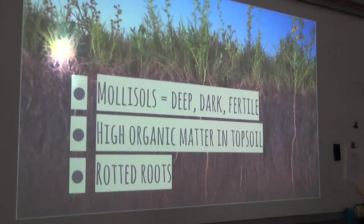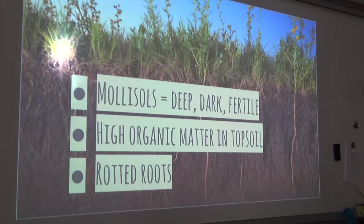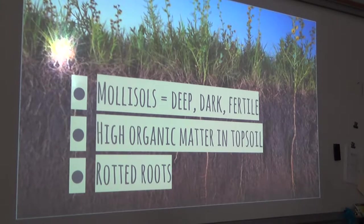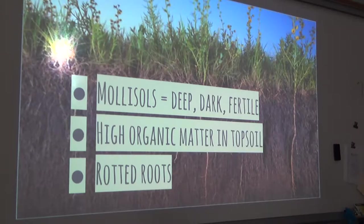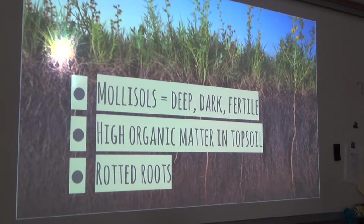The soil of temperate grasslands is characterized by rich nutrients and a deep dark layer of topsoil. Most grasslands have mollisols and are rich in nutrients because of the growth and decay of organic matter. Rotted roots hold soils together and provide a food source for living plants. The taller the grass is in the environment, the more organic matter is created and the more fertile the soil is.